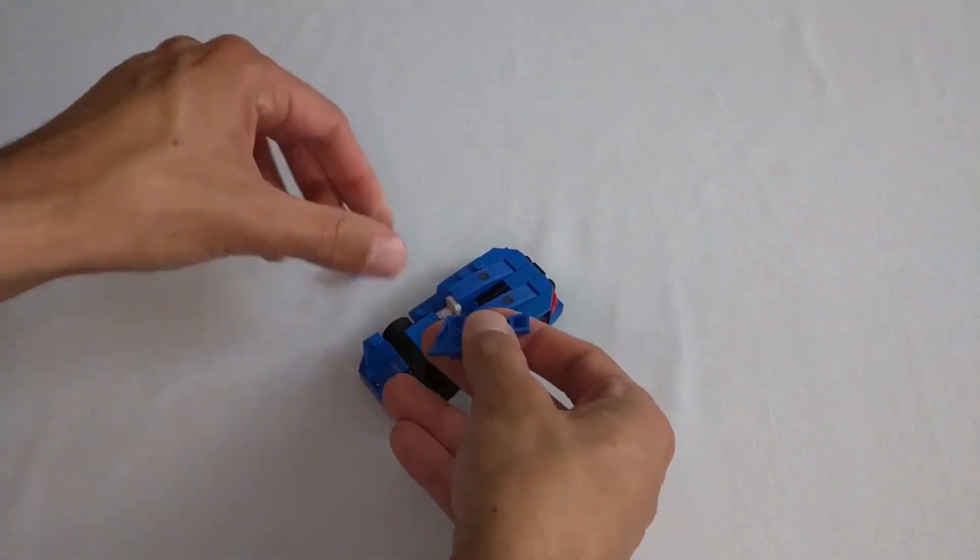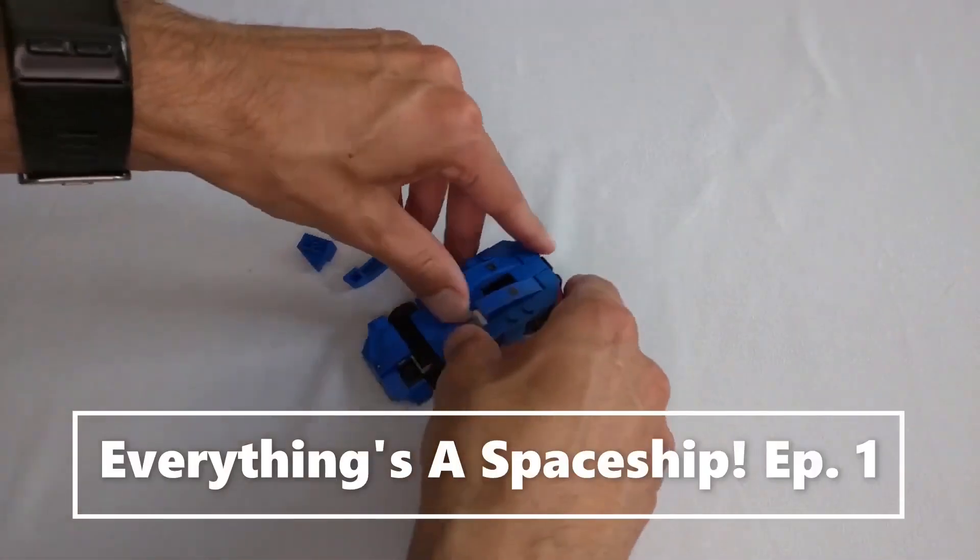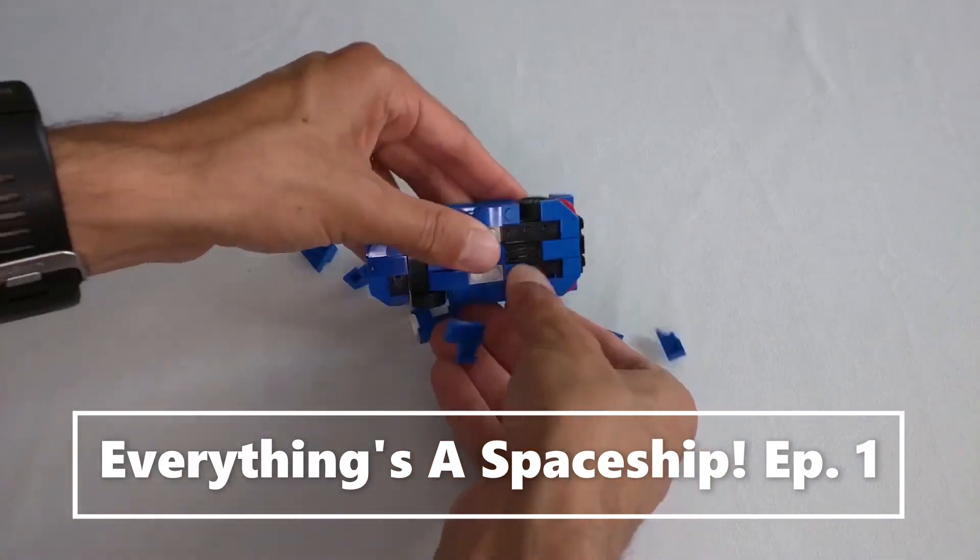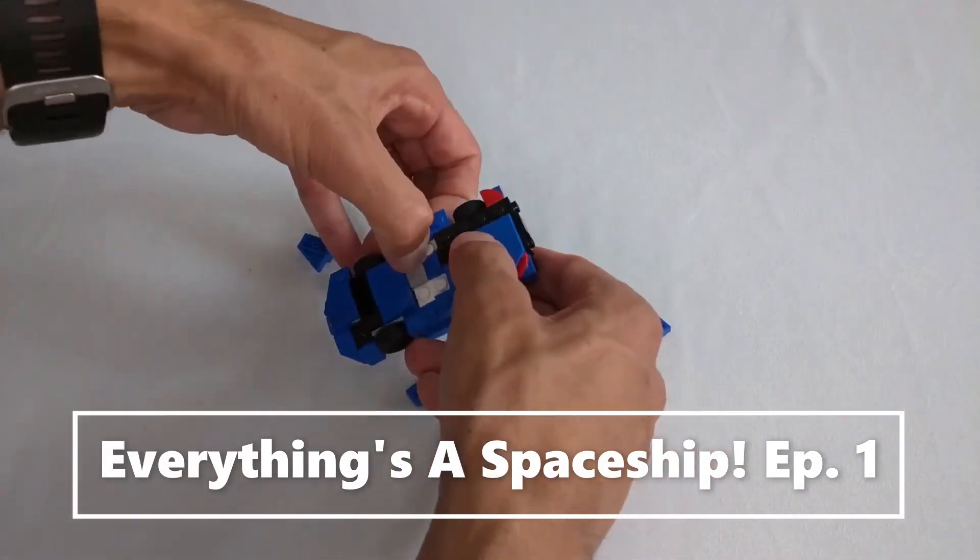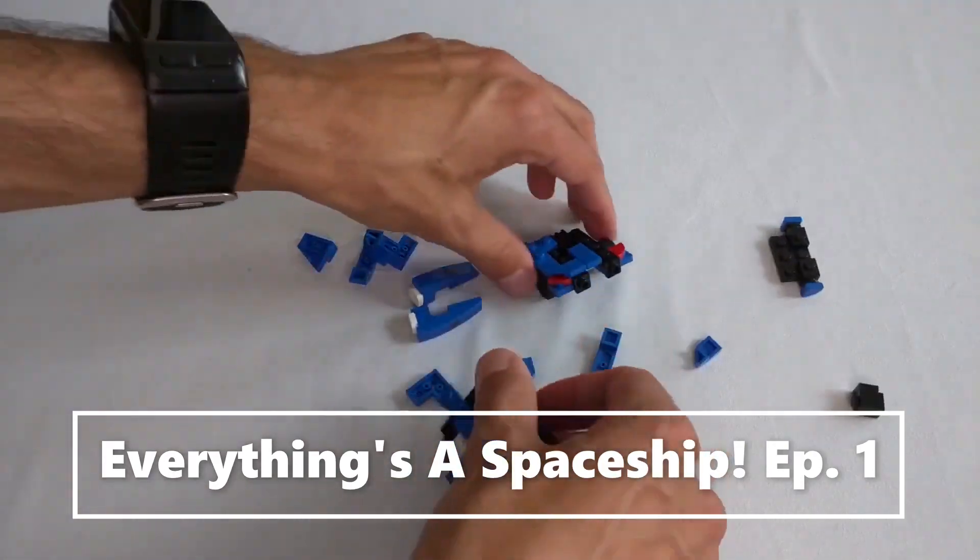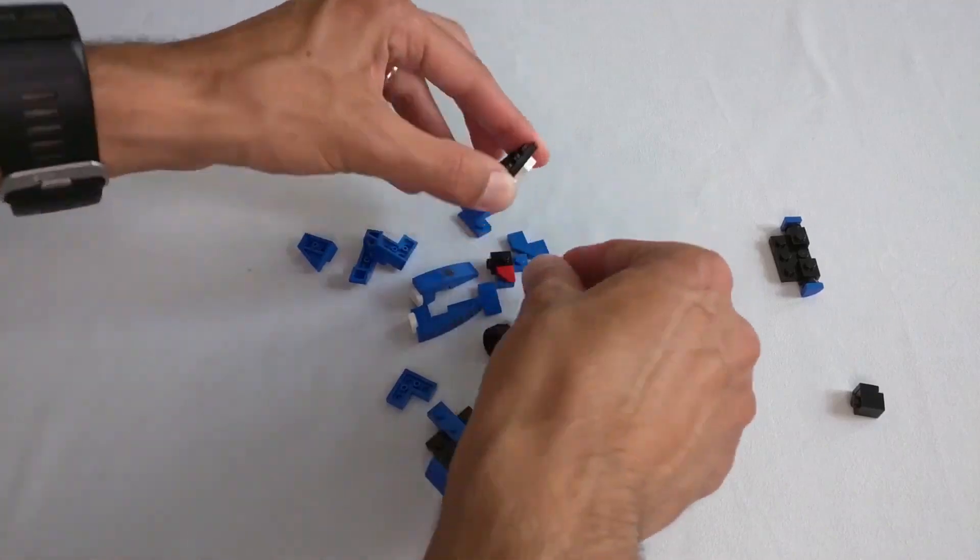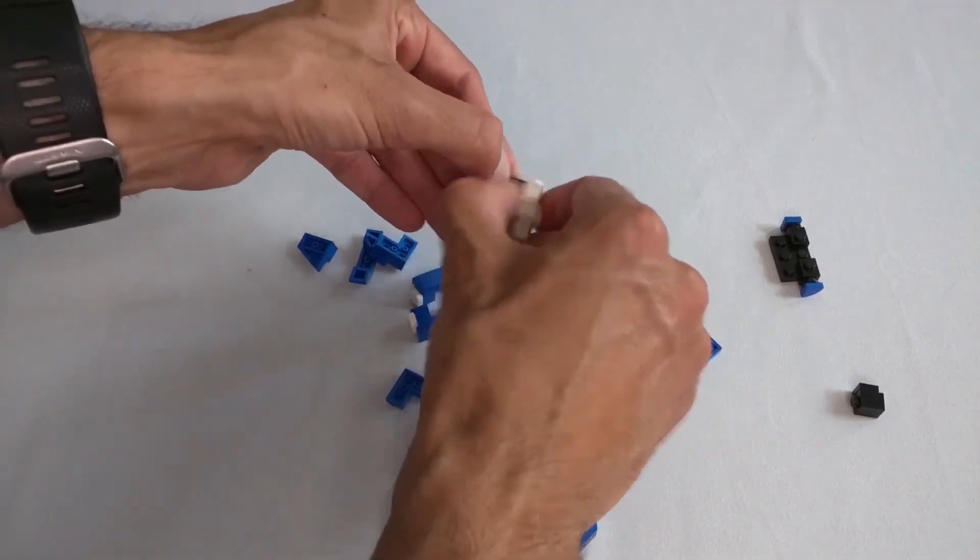So let's start by taking apart this set here. I've got something to prove here, that every set is a spaceship. Every set is a spaceship in disguise.